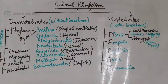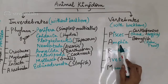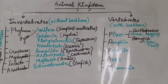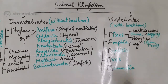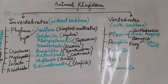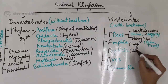Class Amphibia are ectothermal, meaning cold-blooded. They live on both land and water. They have a three-chambered heart except for the crocodile. They breathe through the skin as well as through lungs and gills. Example of Amphibia is frog. Class Reptilia are again cold-blooded land animals having lungs for breathing and a three-chambered heart. Example: lizard.